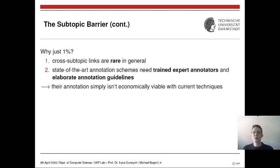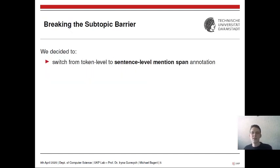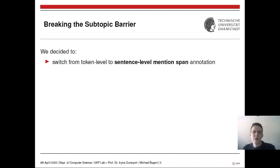The question is clear: how can we annotate a corpus with many of these links in an affordable and scalable manner? This is what we tackled in our work. Our first idea was to switch from token-level to sentence-level mention span annotation.